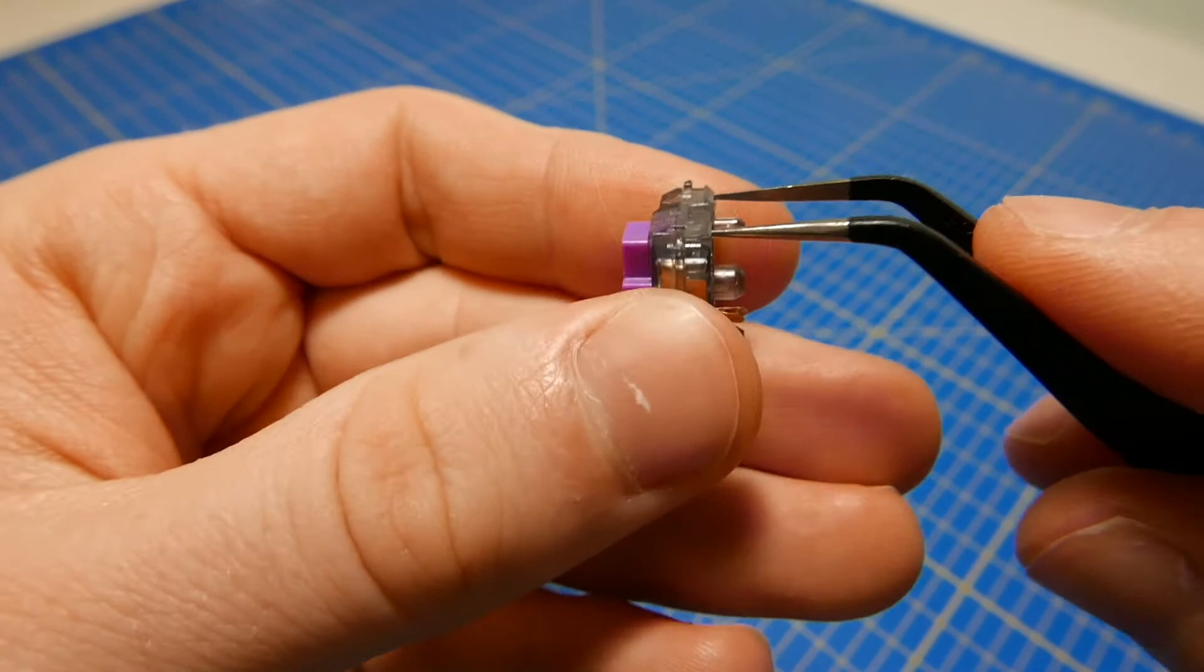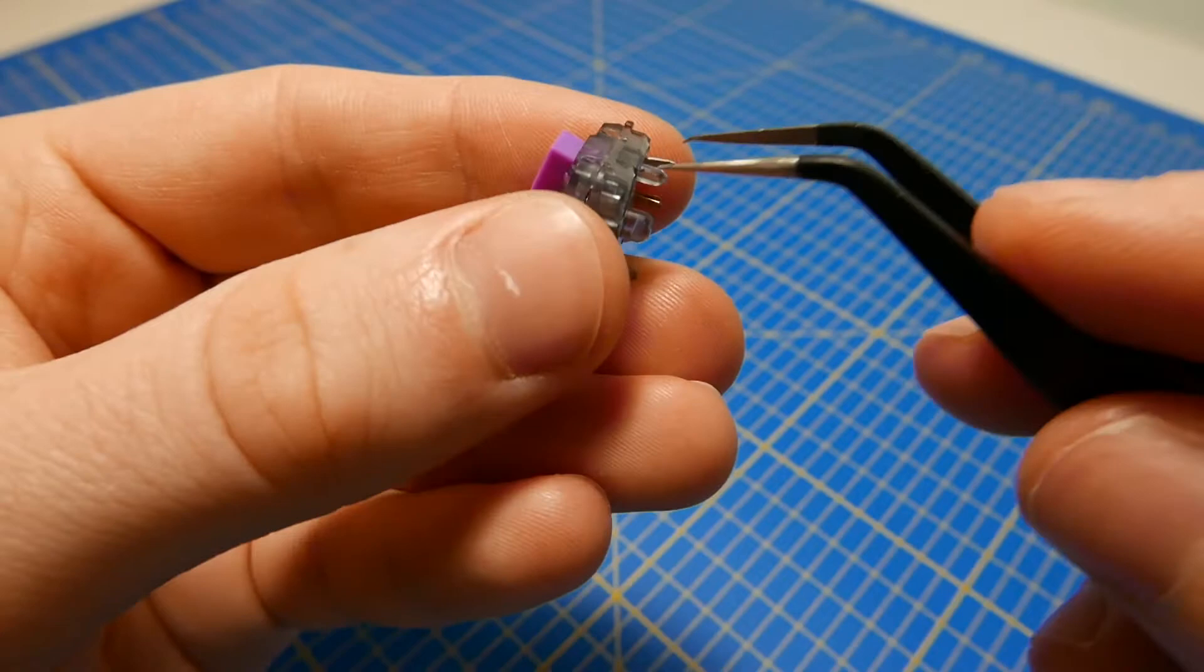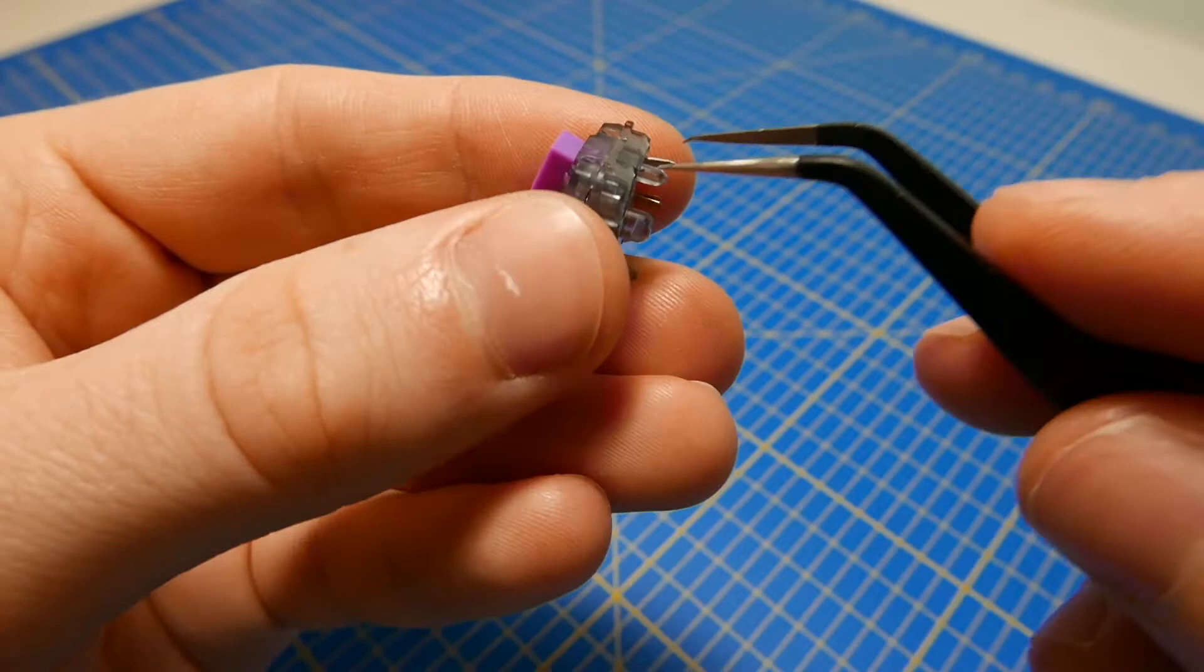Open your switch with the tweezers. You need to slide the tweezers underneath the legs of the top housing, like this, to release it from the bottom housing. Repeat this on both sides and the switch will come apart.